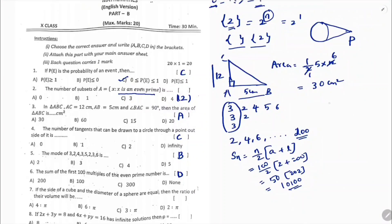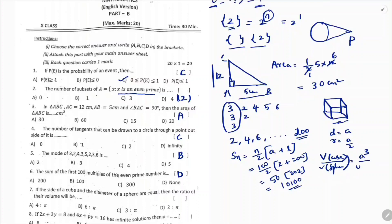Next question: if the side of a cube and the diameter of a sphere are equal, find the ratio of their volumes. Let the side of the cube be 'a', so the diameter equals 'a' and radius equals a/2. Volume of cube = a³. Volume of sphere = (4/3)π(a/2)³ = (4/3)π(a³/8). Ratio = a³ / [(4/3)π(a³/8)] = 6/π. The correct option is B.